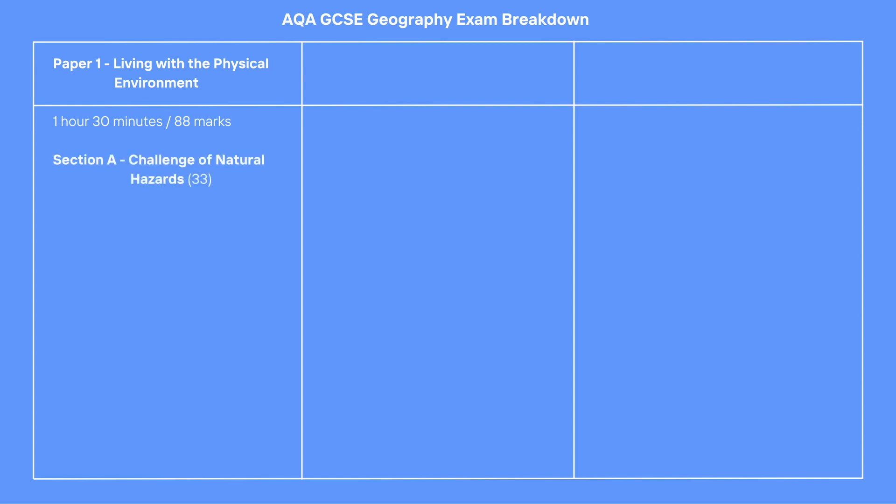Section A is first. It is the Challenge of Natural Hazards, which includes tectonic hazards, weather hazards and climate change. You answer all questions in this section. 33 marks are available, including 3 for spelling, punctuation and grammar on a 9-mark question.